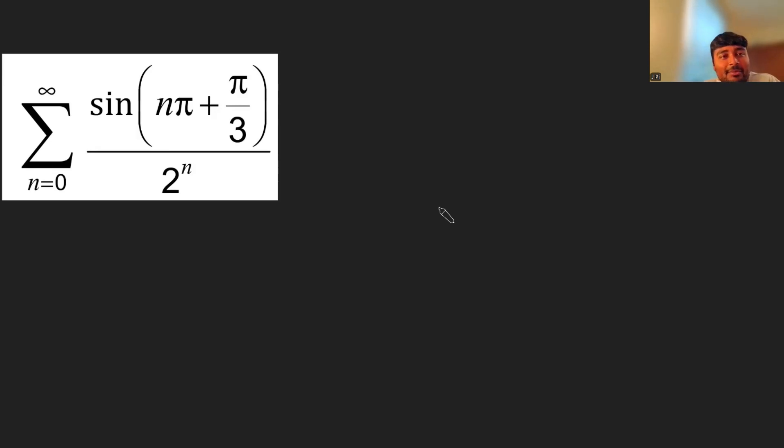This question comes from last year's TMUA paper. We want to know the infinite sum from n equals 0 to infinity of sine of n pi plus pi over 3 divided by 2 to the n. This is a multiple choice problem, but I've hidden the options just to make it slightly more challenging. Let's dive in with the solution here.